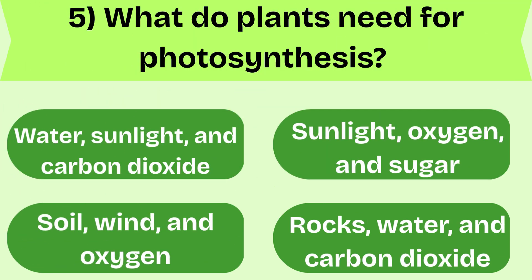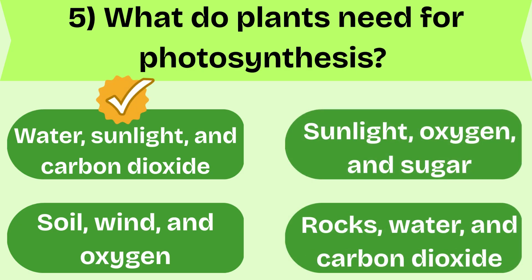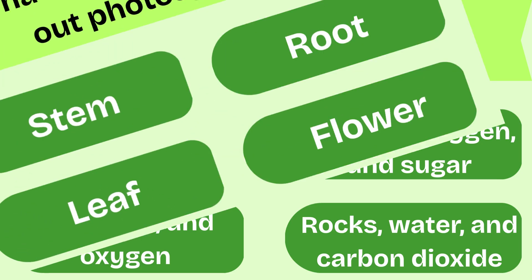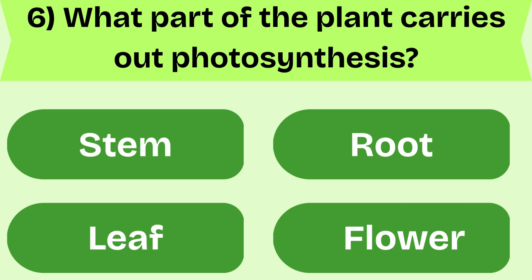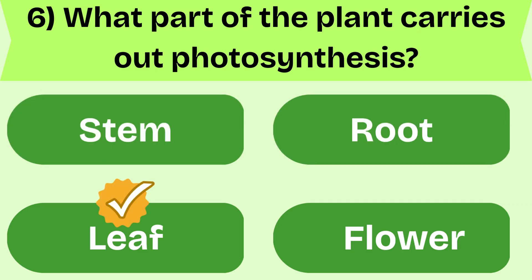What do plants need for photosynthesis? Water, sunlight, and carbon dioxide. Excellent. Try the next one. What part of the plant carries out photosynthesis? Leaf, great going. Try the next one.